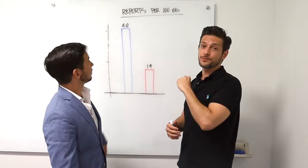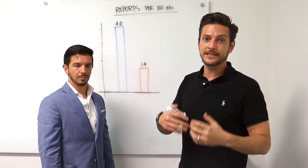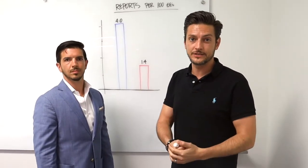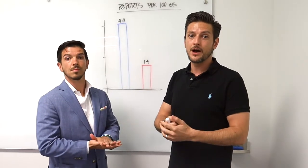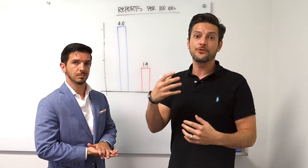So this is our metric for reports per 100 employees. Listen, the name of the game in HR and compliance and ethics is getting more reports. We know that 60% of things don't get reported and 80% of folks in organizations that aren't super ethical, they're not even picking up the phone to report.